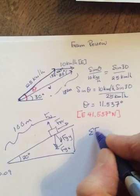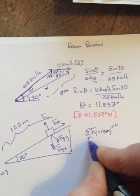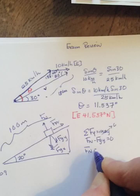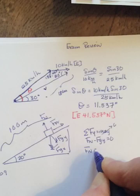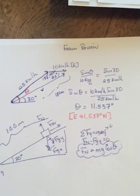Sum of the forces in the y will equal 0. It will be Fn minus Fgy equals 0. So Fn should be equal to mg cos theta. Don't have a mass, can't find it.